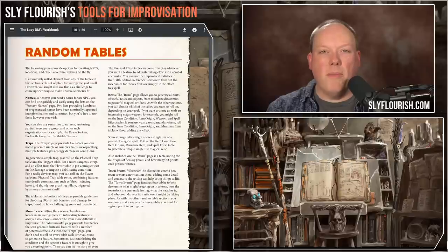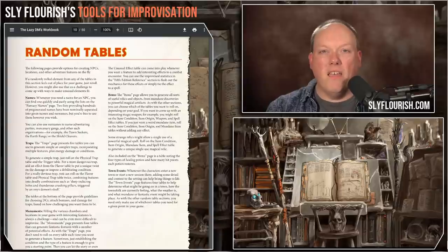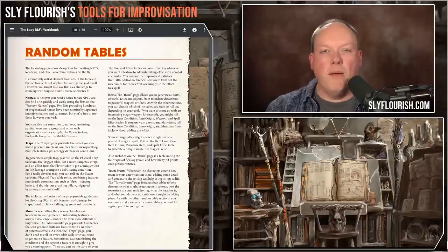Number three: random tables are a fantastic way to shake our minds up and give us new ideas that we can drop right into our game — ideas we never would have come up with on our own. The key idea here is to have the right random tables in front of you at any given time. When I wrote the Lazy DM's Workbook, I wanted to have a focused set of random tables that helped you improvise directly during the game.